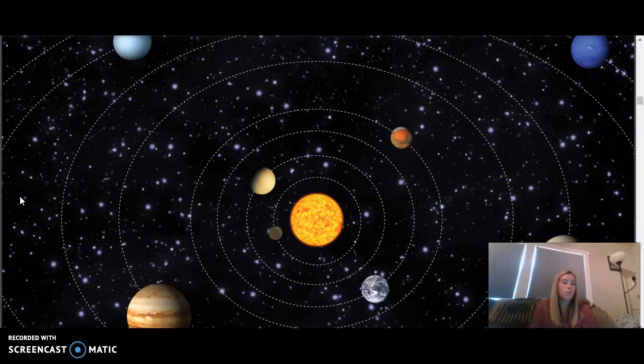It is believed that our solar system formed a very long time ago from a huge cloud of gas and dust. Just how long ago did it form? A really long time ago. Many scientists think our solar system is about four and a half billion years old.